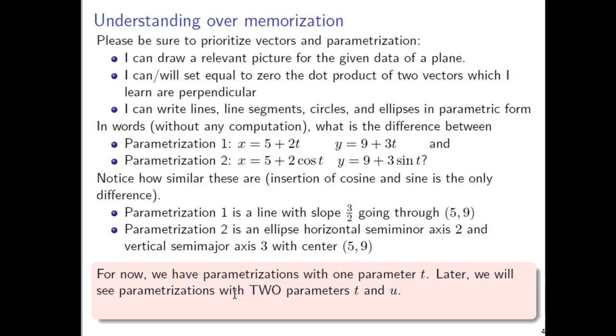So we have, for now, we've been looking at parametrizations that just have one parameter called t, one thing that stands for time. Later on, we are actually going to see, in the final chapter of multivariable calculus, parametrizations that involve two parameters, say they're called t and u, the two parameters. And what we're seeing now with parametrization is just a warm-up to something much more important that we have to have a complete handle on in order to do anything meaningful in chapter 16.